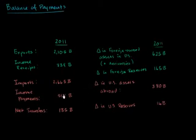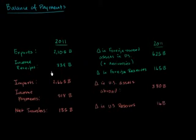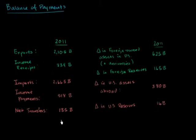Right over here I have information for the United States in 2011. All of the numbers are denominated in dollars. In green, I have all of the reasons why currency or payments would be made to the US — either the government of the US, the Federal Reserve, or to citizens of the US. And in orange, I have all the reasons why payments would be made to folks outside of the US — either the governments, central banks, or private citizens.